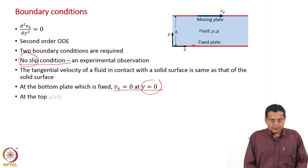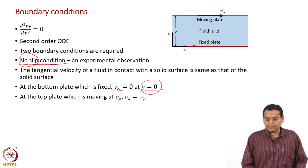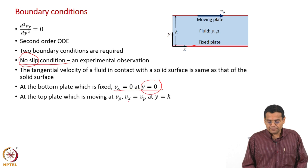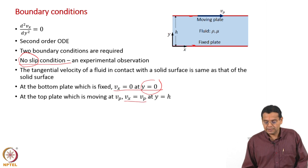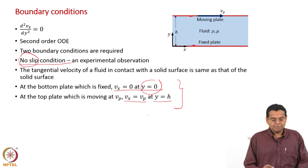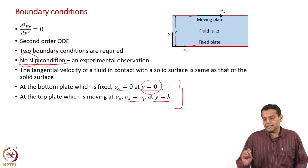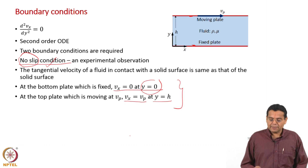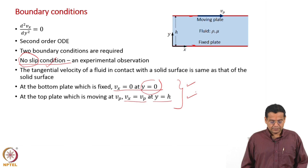And at the top plate, which is moving, the velocity is vp. The topmost fluid layer has velocity vp, and the y coordinate there is h. So these two are the boundary conditions written based on the no-slip condition: at the bottom plate, velocity of the fluid is 0 at y equal to 0; at the top plate, velocity of the fluid equals velocity of the plate, vp, at y equal to h.